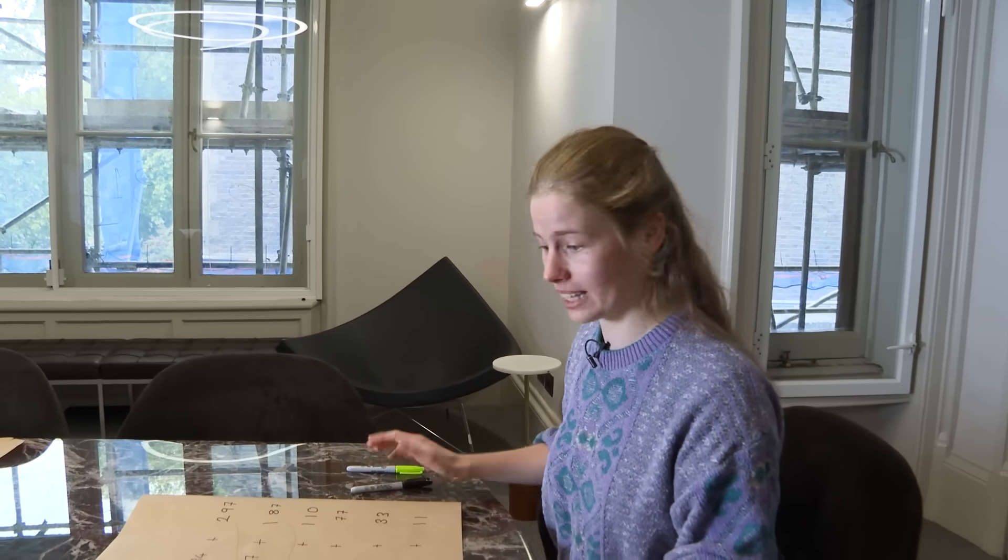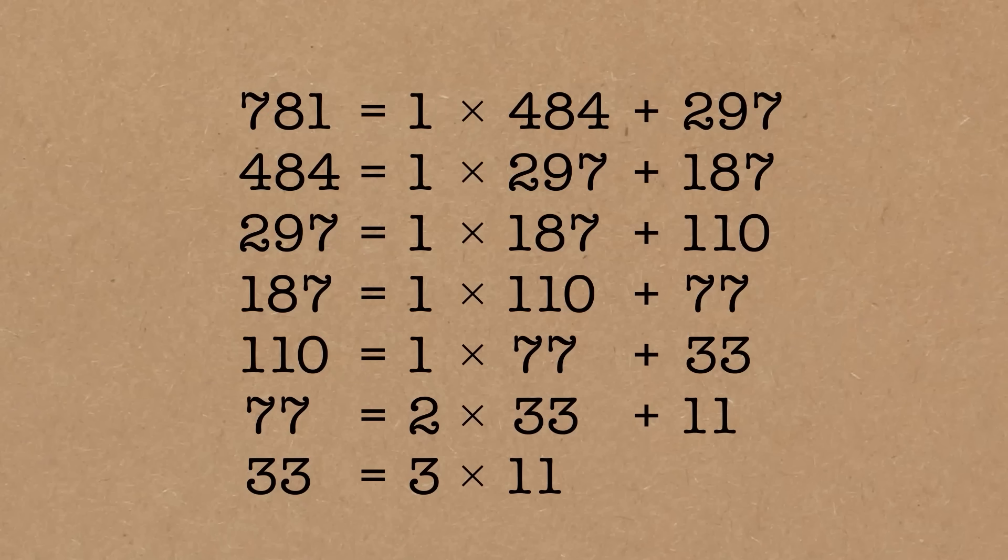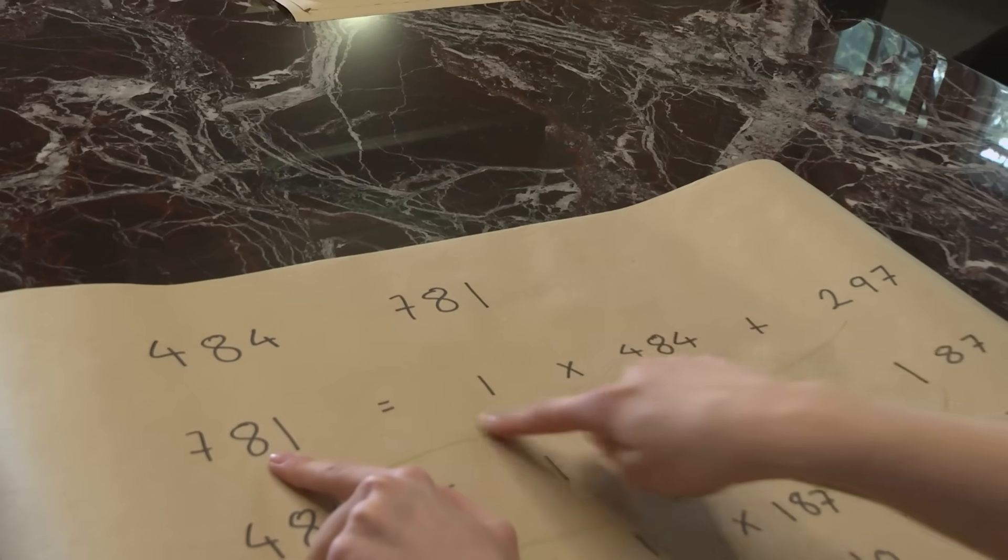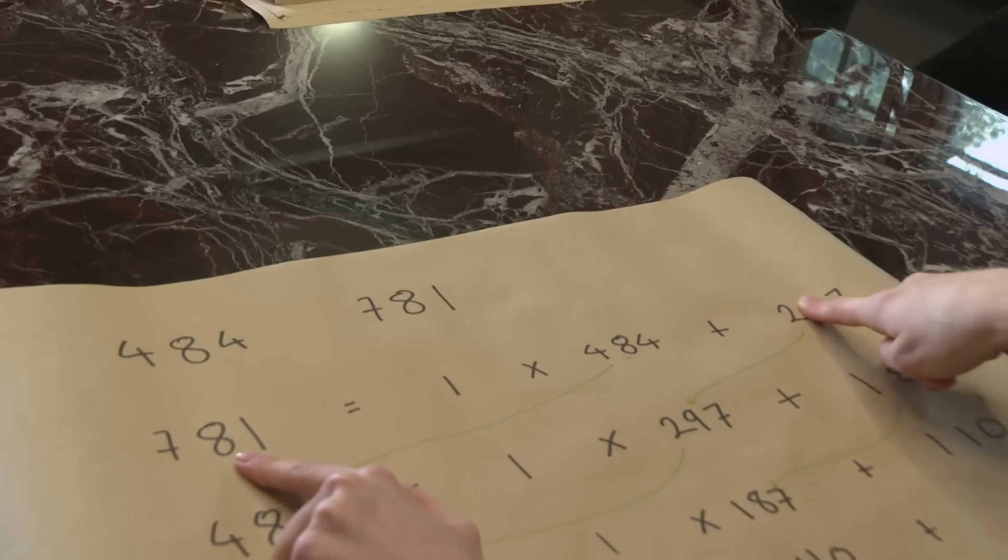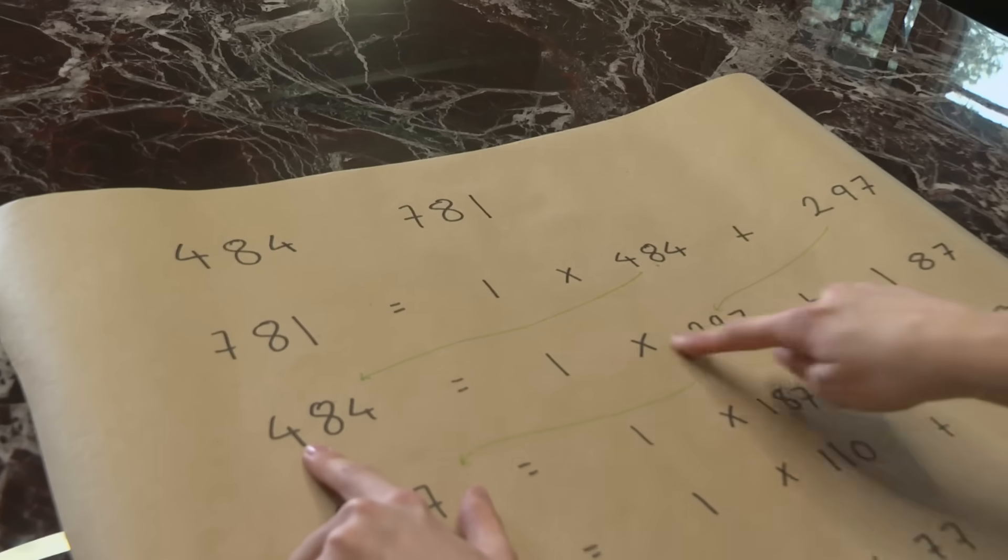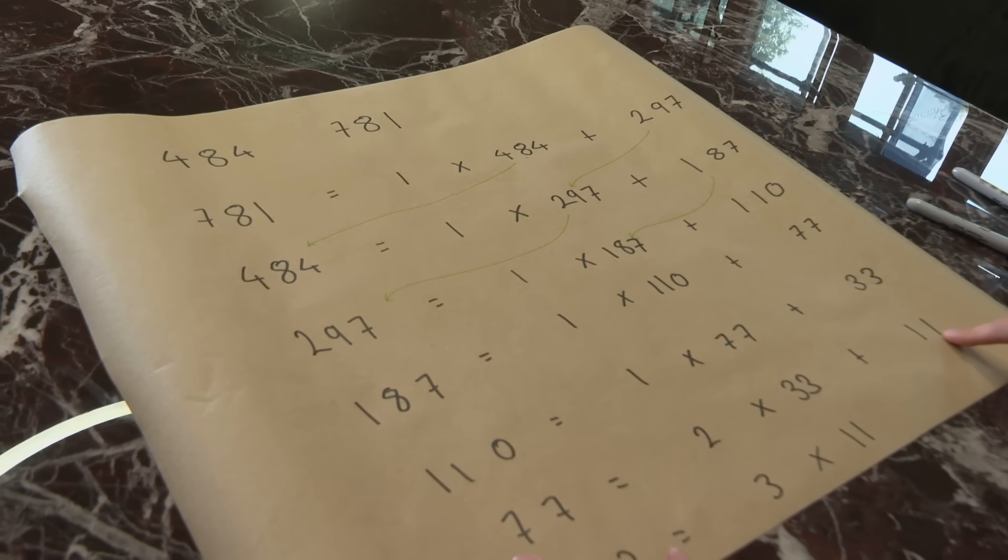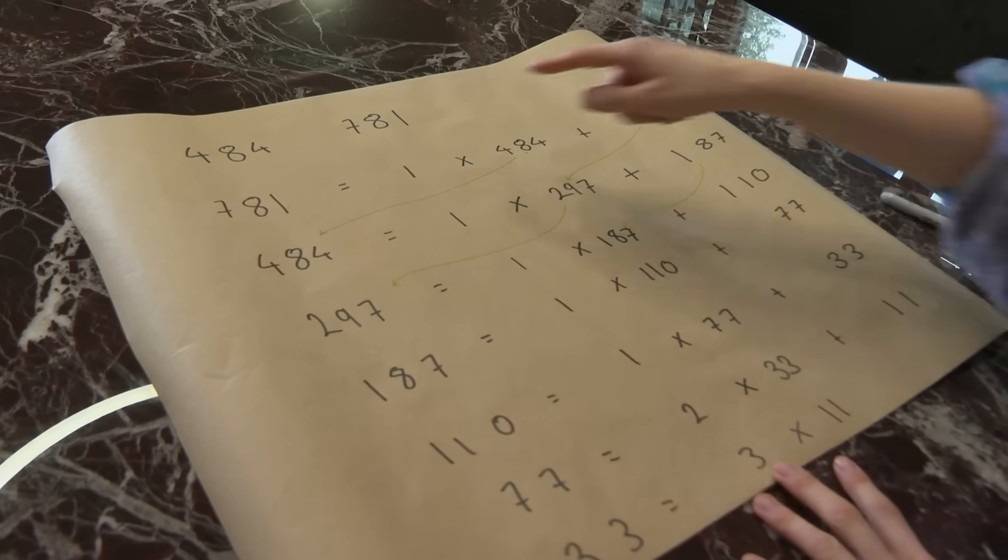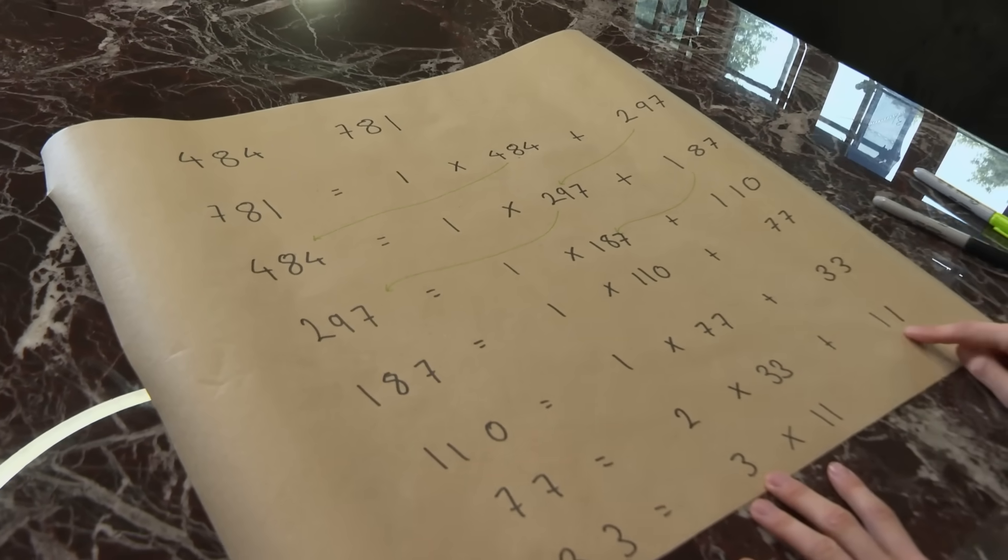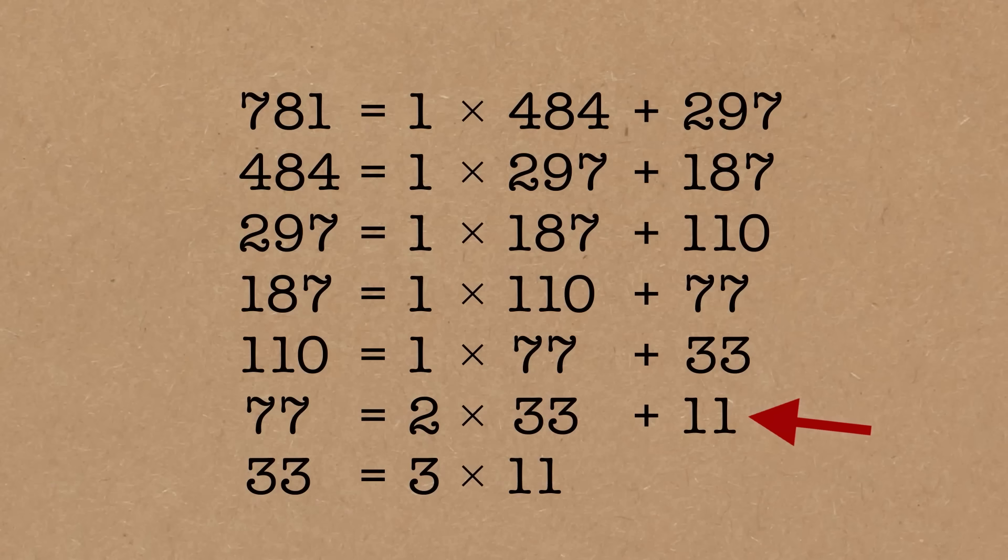So is it the greatest common divisor? Well, let's have a look. The greatest common divisor is going to divide 781 and 484. So any number that divides 781 and 484 has to divide 297. So if it divides this and this, it's going to have to divide this for this equation to work. And then we can go down. It divides this and this. So it has to divide this, this, this. So going all the way down, any divisor of 484 and 781 has to divide 11. So 11 has to be the greatest one. So 11 is the greatest common divisor.